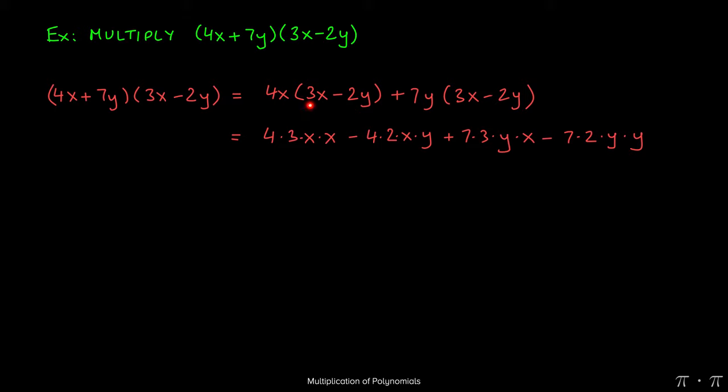So let's start by doing that. When we distribute, we can put the 4 and the 3 next to each other, the x times the x can be written next. Similarly, 4 times the negative 2 can be written as negative 4 times 2, x times the y will just get written as it is. 7 times the 3 comes here, and then y times x is written so. And lastly, positive 7 times negative 2, we can pull the negative out and just write 7 times 2 with a y times y left over at the end.